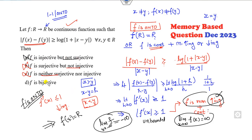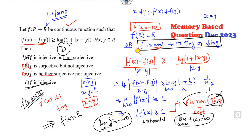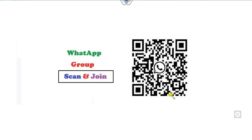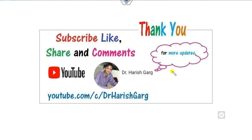This means F is onto. So option D is the correct answer. You can see it's very simple — using the property of continuity and monotonicity, and recognizing F is an unbounded function. If you want to join my WhatsApp group, scan and join. Until then, please like, share, and comment on the video. Best of luck, students!